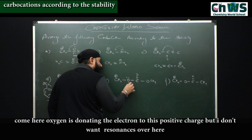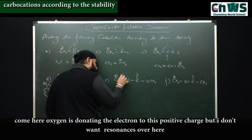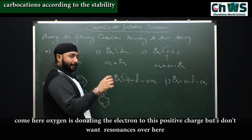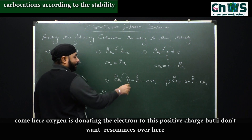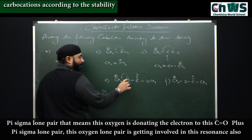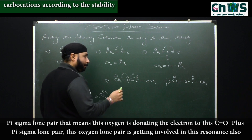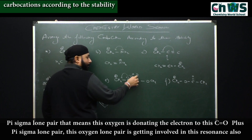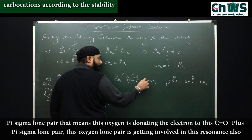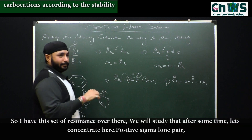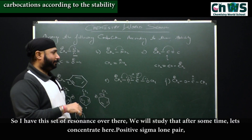Oxygen is donating the electron to this positive charge, but I also have many resonances here. Pi sigma lone pair — this oxygen is donating the electron to the C=C double bond as well (pi sigma lone pair). So this oxygen lone pair is getting involved in this resonance also, giving a set of resonances.